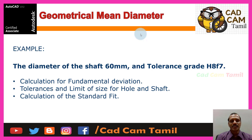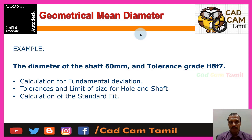Now let's take an example. Diameter of shaft: 60 mm, tolerance grade h8 f7. Hole zone: H, IT grade 8. Shaft zone: F, deviation 7. We need to calculate maximum deviation, minimum deviation, maximum limit, minimum limit, and fits.